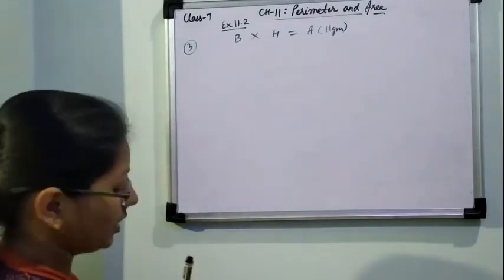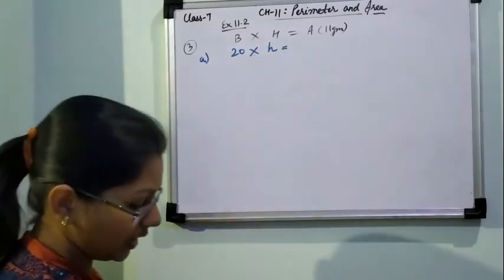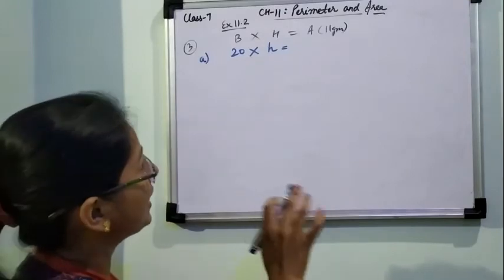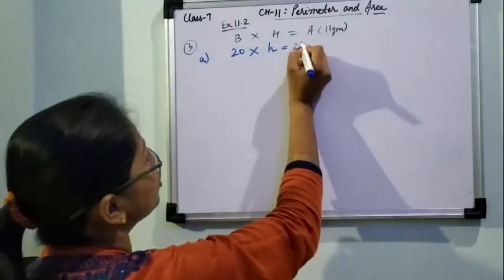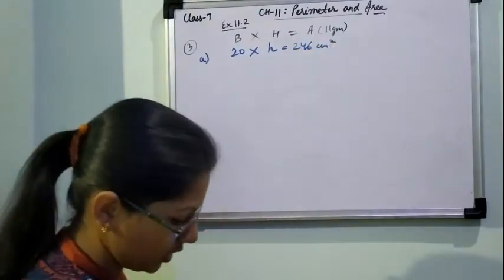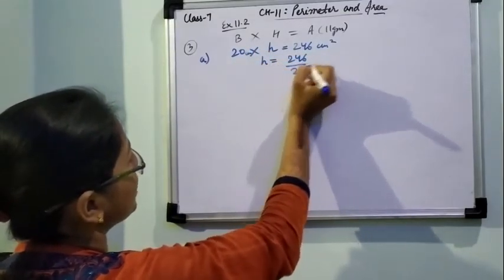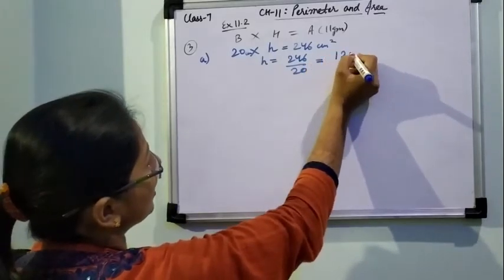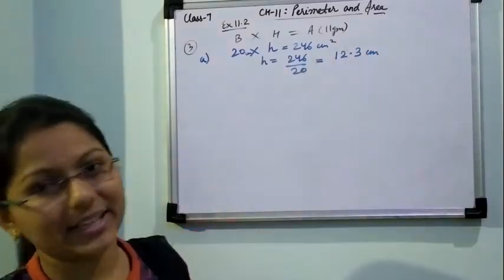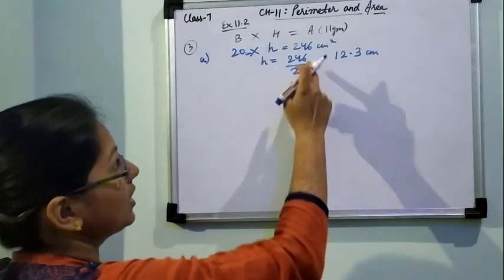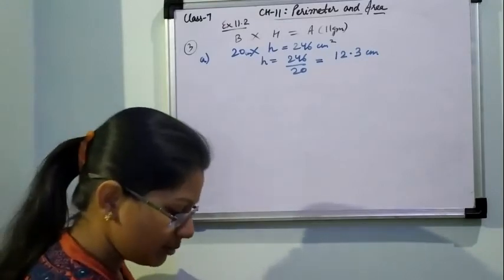For example in part A, base is 20 cm and area is 246 cm square. Writing the formula: area of parallelogram = base into height. So 246 = 20 into height, which gives height = 246 ÷ 20 = 12.3 cm. Since it is height, the unit is centimeter, not centimeter square — the cm square divided by cm gives cm. Similarly for other parts, divide by whichever value is given to find the missing one.